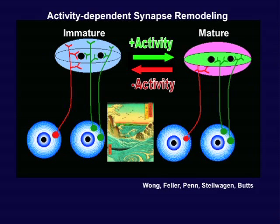To get the mature pattern of connections, synapse remodeling happens during development — involving both the elimination of inappropriate inputs and the strengthening and stabilization of appropriate inputs. We also know this remodeling process requires neural activity. We discovered this by blocking neural activity during the period when this remodeling happens. When we blocked activity, we discovered a persistence of the immature pattern of connectivity — a failure to remodel connections — and the eye-specific layers did not emerge.